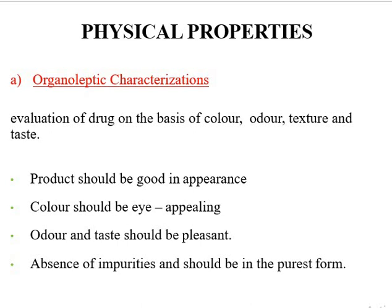Physical properties of a drug molecule can affect the structure, stability, and availability of a dosage form, making them very important parameters in pre-formulation studies. The first physical property is organoleptic characterization. Organoleptic characters are those perceivable by the senses such as color, odor, texture, and taste. A product should be good in appearance, color should be eye-appealing, odor and taste should be pleasant, and the product must exist in its purest form.